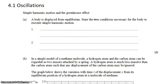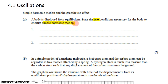David Kahn here with another IB Question Bank question in topic 4.1, Oscillations. We're talking about simple harmonic motion. It says, a body is displaced from equilibrium. State two conditions necessary for the body to execute simple harmonic motion.